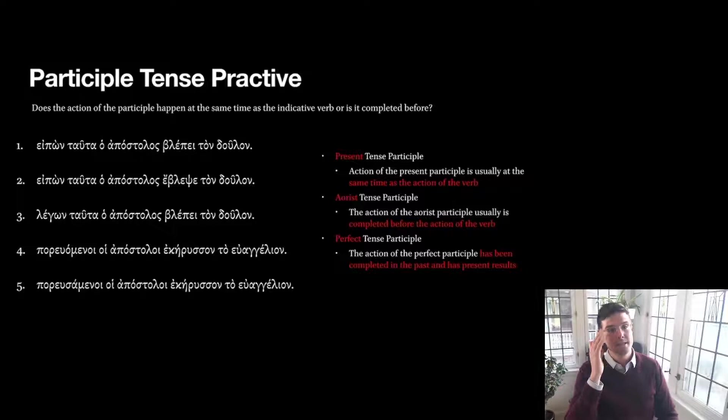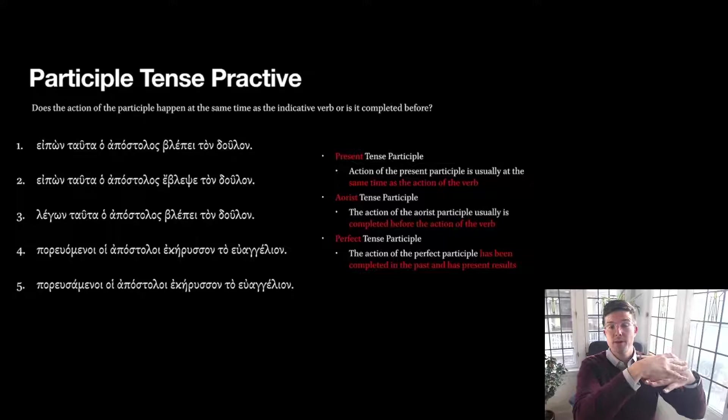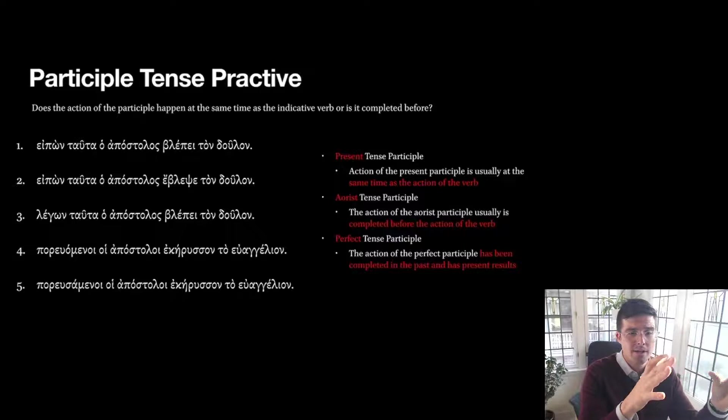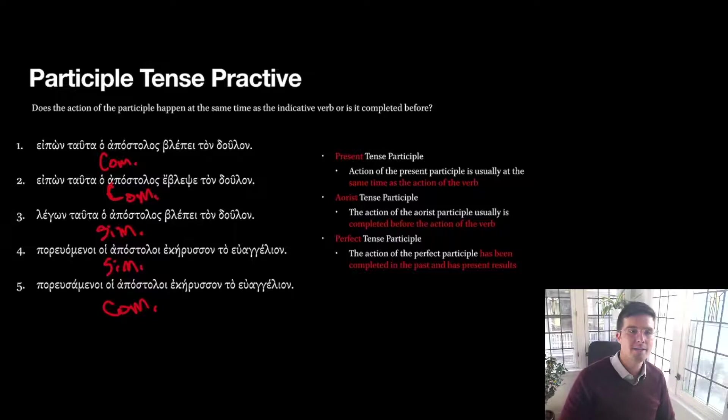What I want you to do here is practice with participle tenses. State whether the action of the verb happens at the same time — contemporaneous with or simultaneous to the action of the main verb, which would be with present tense participles — or whether the action is completed, with an aorist tense participle. I'm asking you to just figure out how the action of the participle relates to the verb. Go ahead and pause.